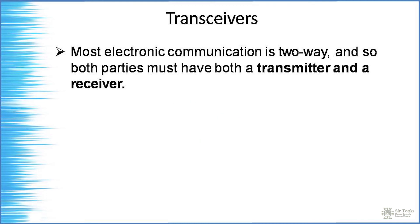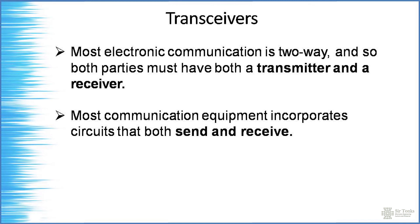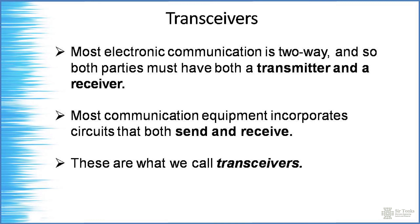A transceiver is a combination of transmitter and receiver. In satellite systems, this is called a transponder — they are the same concept. A transceiver is capable of both transmitting and receiving, so it is two-way, but internally it still has two separate transmit and receive sections. Most modern communication equipment incorporates a transceiver. A TV broadcast is a one-way system — the viewer only receives.